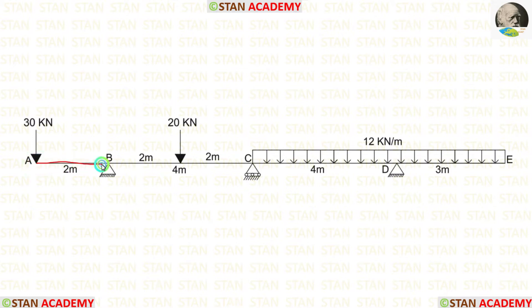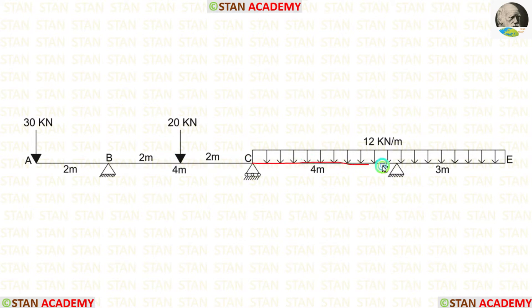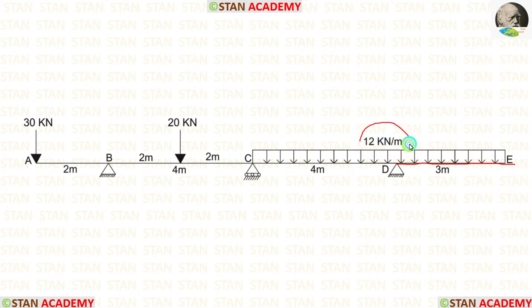In the overhanging AB, we have a point load of 30 kN at point A. In the span BC, there is a point load of 20 kN acting at the center. In the span CD, there is a UDL of 12 kN per meter acting for the full span. In the overhanging span DE, we also have a UDL of 12 kN per meter.